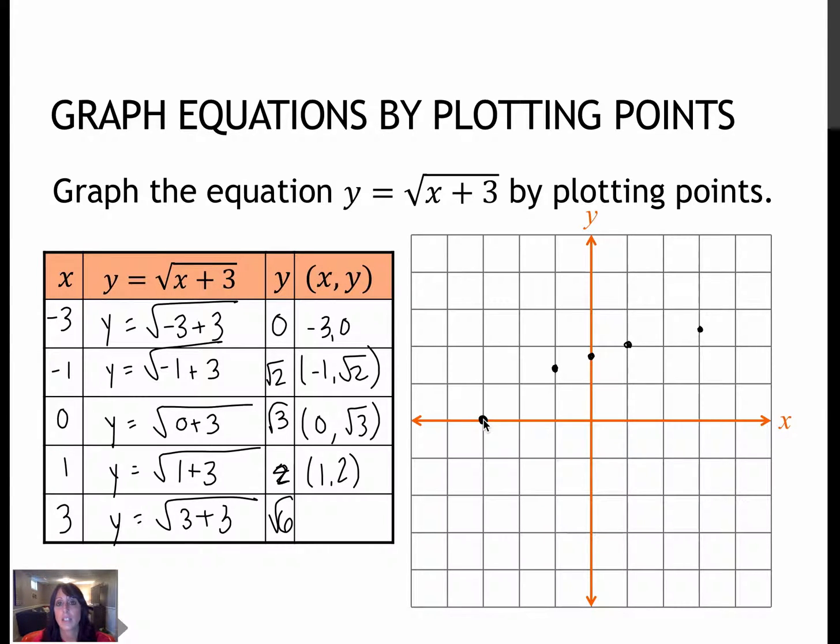Now, notice this started here at 0, so I could just start connecting the dots here. But let's see what happens if I plug in negative 4. So negative 4 would be negative 4 plus 3, which would be the square root of negative 1, which we all know is an imaginary number.